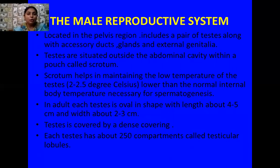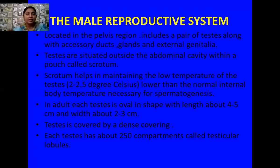The male reproductive system is located in the pelvic region of the body. It includes a pair of testes along with male accessory ducts, male accessory glands, and external genitalia. Testes are situated outside the abdominal cavity in a pouch-like structure known as the scrotum. The scrotum helps in maintaining the low temperature of the testes — the temperature inside the scrotum is 2 to 2.5 degrees Celsius lower than the normal internal body temperature, which is required for the process of spermatogenesis.